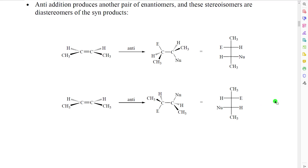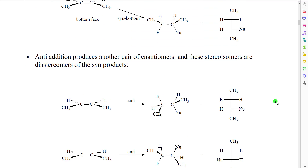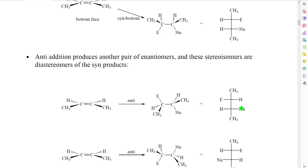If we then compare molecules from the syn-addition with stereoisomers from the anti-addition using the Fischer projection, it should be very clear that comparing these two molecules, some of the stereocenters have the opposite configuration whereas others have the same configuration, which makes them not perfect mirror images, and they are also not superposable. So the syn-stereoisomers and the anti-stereoisomers would be diastereomers of each other.